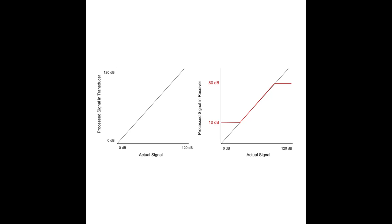The important part is that the weak signals are still on the weak side and strong signals are still on the strong side. The transducer can handle analog signals from 0 to 120 decibels. The receiver, with a dynamic range of 70 (80 to 10), needs anything below 10 to be amplified up to 10 — those 2, 3, 4 decibel signals are amplified to 10, still on the weak side — and anything stronger than 80 is reduced down to 80, still on the strong side. We have compressed the values from a range of 120 down to 70, keeping weak weak and strong strong, so no errors are introduced. That is first compression.